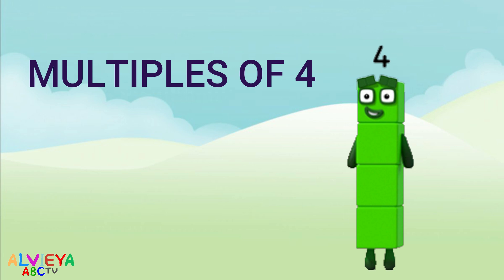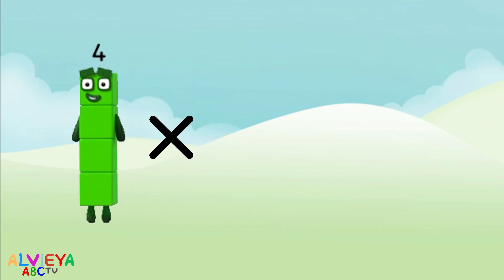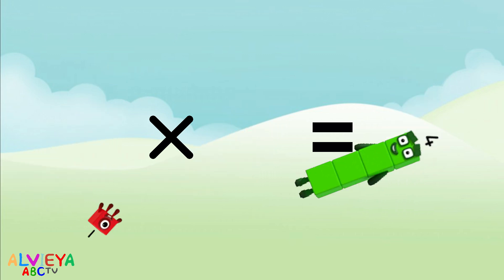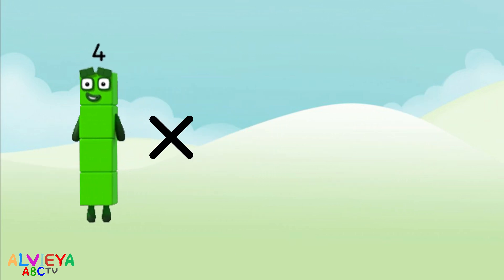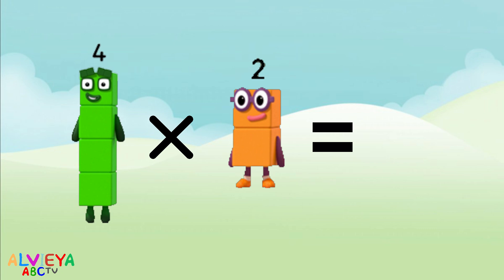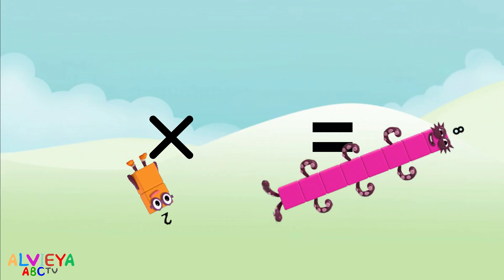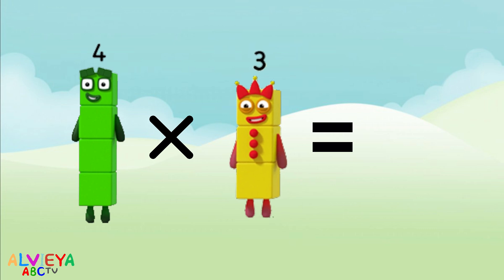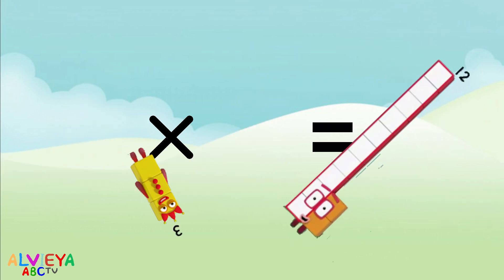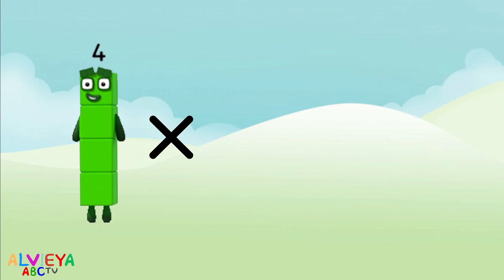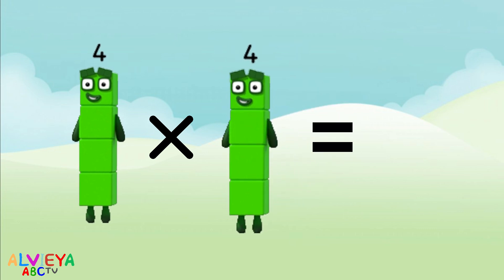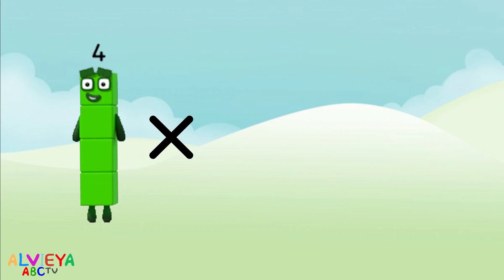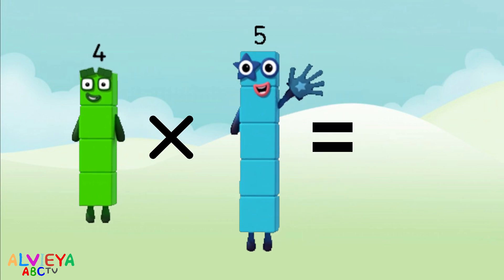Four times one equals four. Four times two equals eight. Four times three equals twelve. Four times four equals sixteen. Four times five equals twenty.